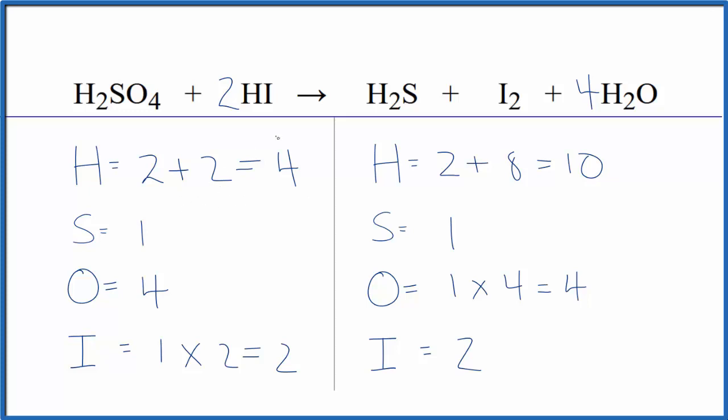One thing that can help us is this iodine here is all by itself. So if we change the coefficient in front of the iodine, that won't change anything else. So here, if I were to get the right number of hydrogens by changing the hydroiodic acid, I could then fix it with the iodine.